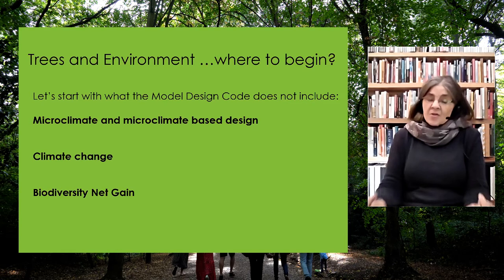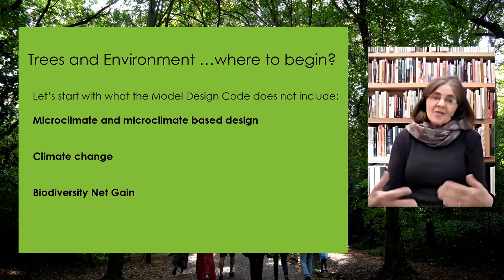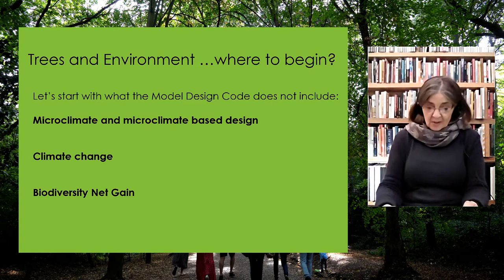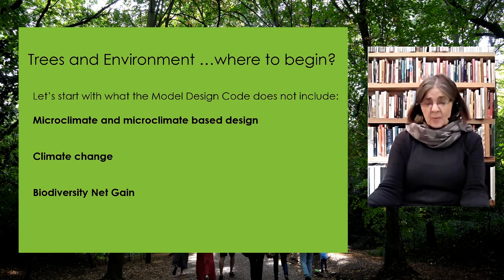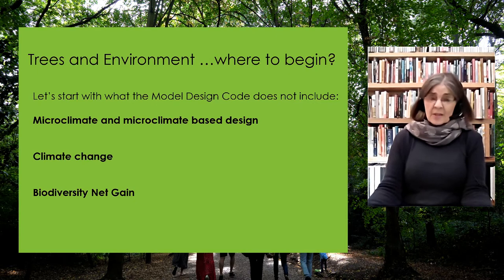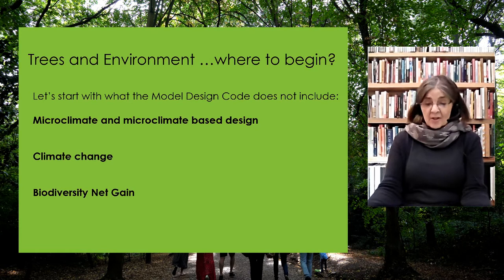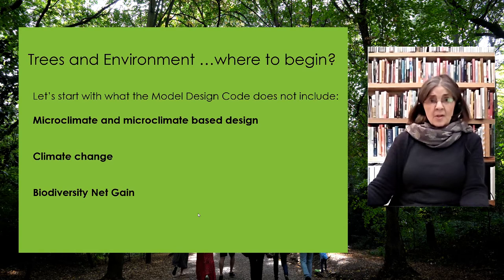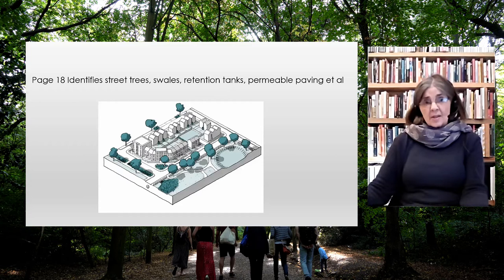We need trees for shading places for our children to play in hot summers. Active travel needs shaded walkways and cycle ways; children need shaded play space; we may even just want shade to sit outside. Then there's biodiversity net gain — likely to be a planning requirement. A 10% minimum should be absolute, but how can design help achieve this, and do we have sufficiently good baseline information to demonstrate we're actually achieving net gain?